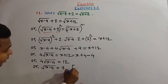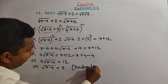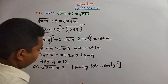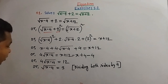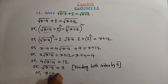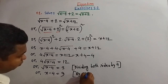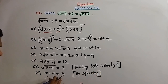Dividing both sides by 4 we get square root of (x minus 4) equal to 3. There is still a radical sign, so for removing this square root sign we square on both sides again. By squaring on both sides we get x minus 4 equal to 9.